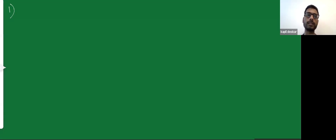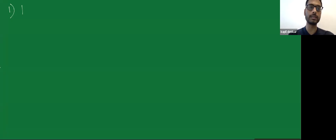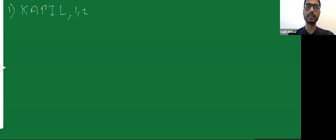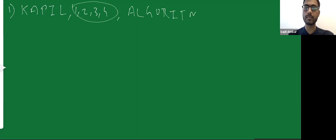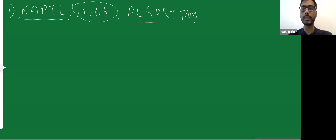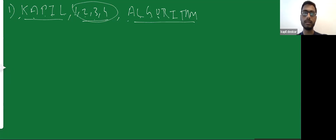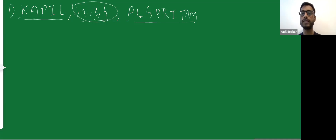So what is the difference when objects are distinct and when objects are not distinct? In previous examples we arranged the letters of words like 'kapil' and 'algorithm', where each and every letter is different — none of the letters is repeated. Similarly, the numbers 1, 2, 3, and 4 are all different. So all the objects are distinct. Today we'll see examples when all the objects are not distinct and find how many permutations are possible.